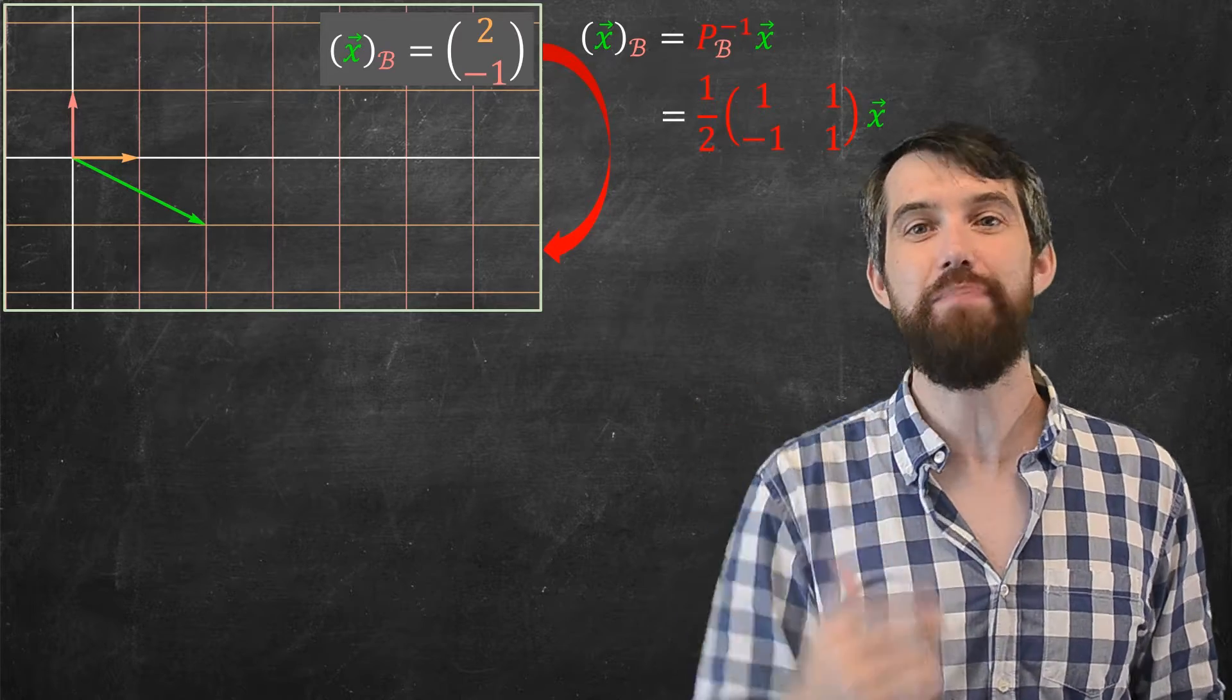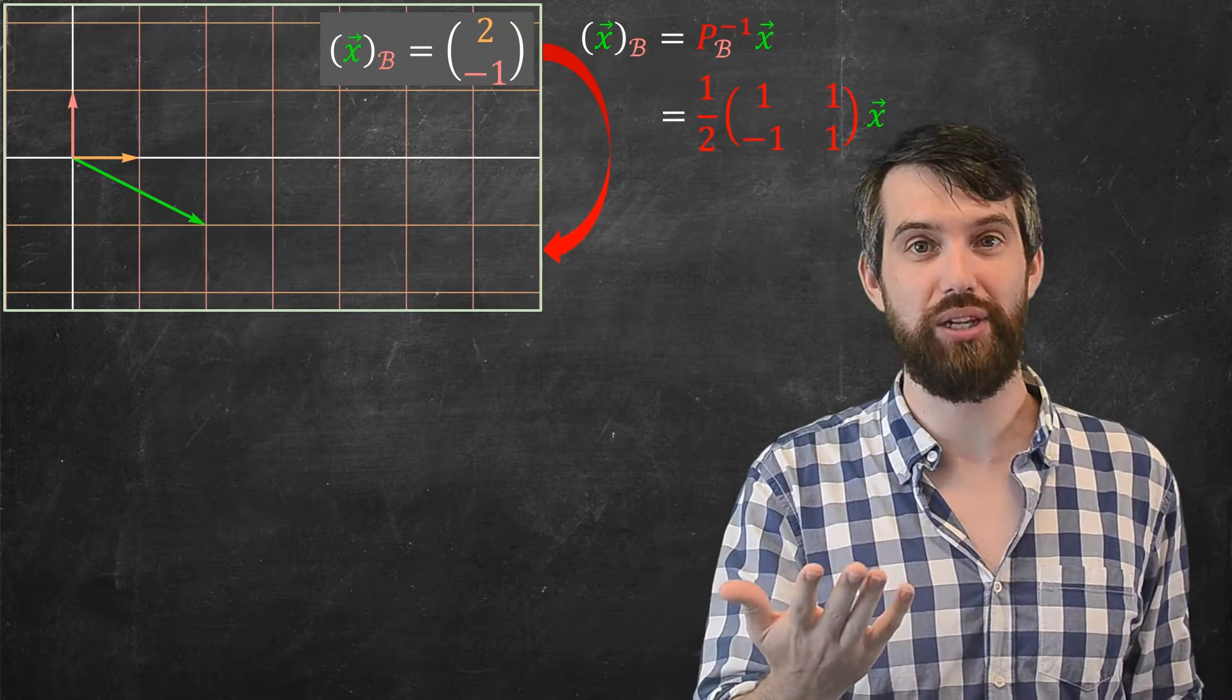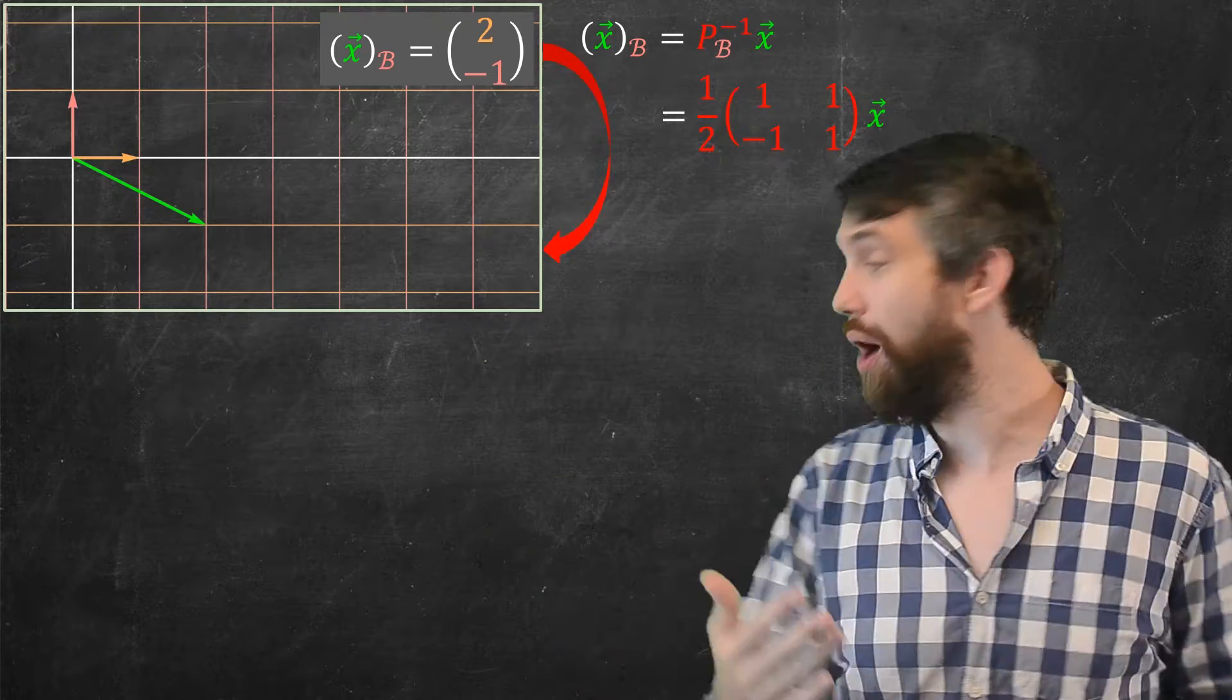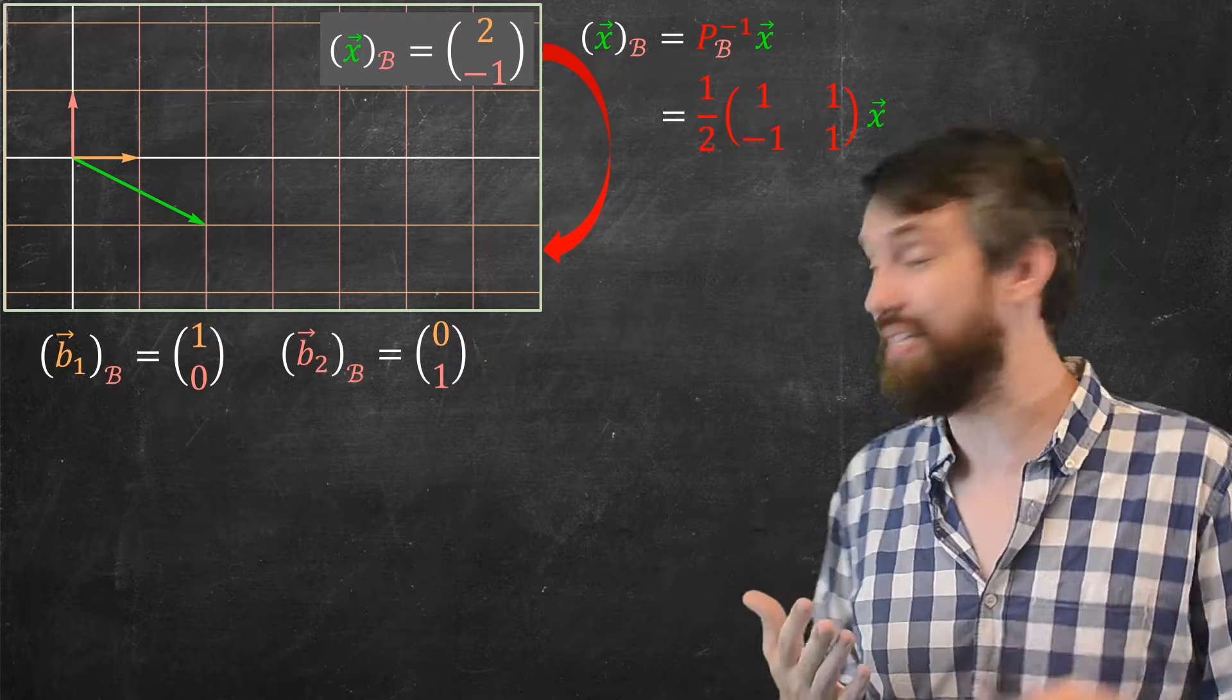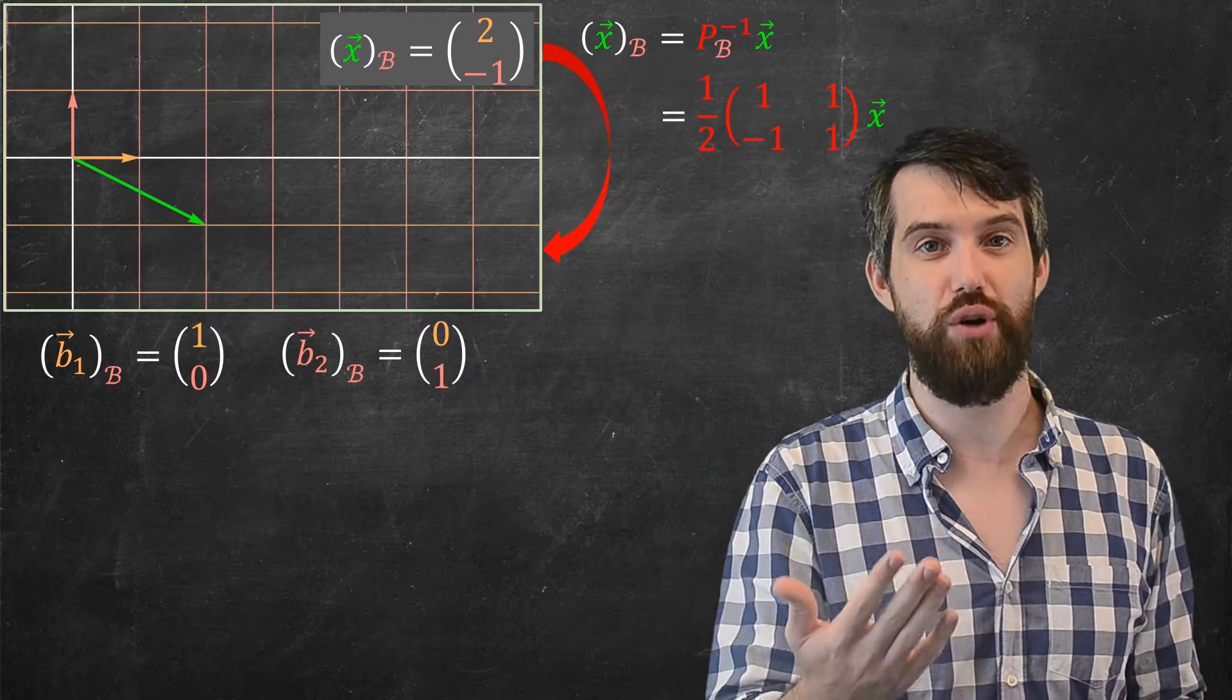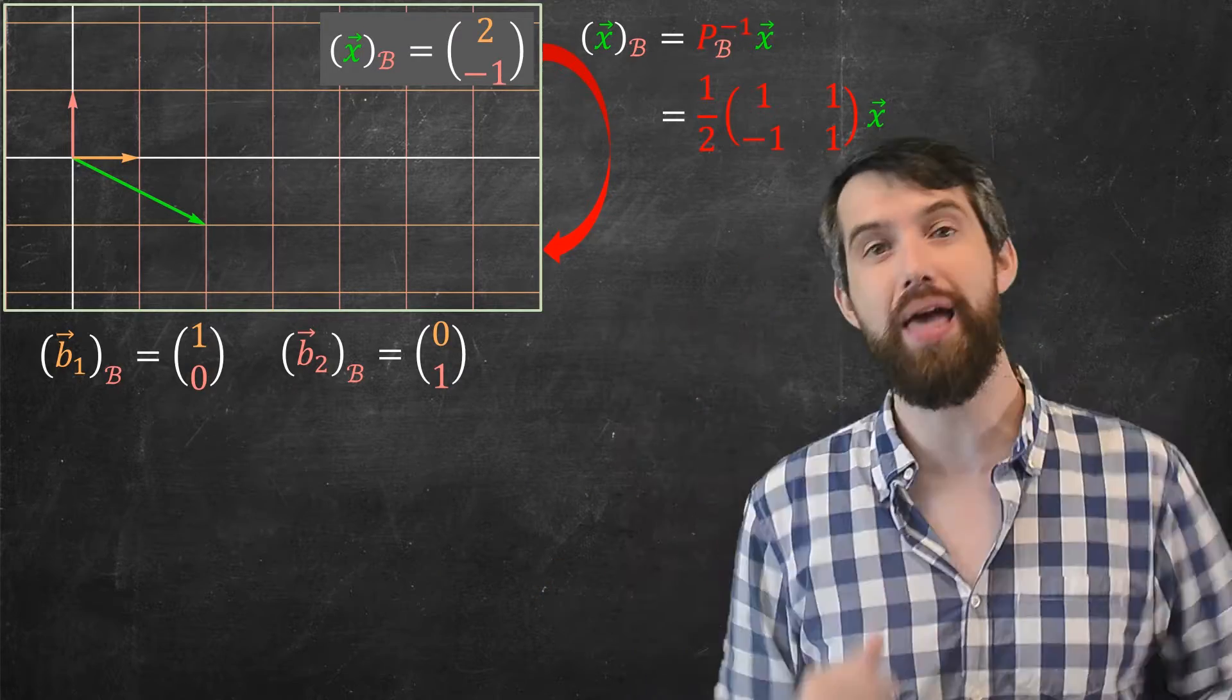Indeed, to somebody in the b basis, what does b1 look like? Well, b1 is one step along b1. To somebody in the b basis, they would say that the vector b written in the b basis is just one zero. It's one step to the right, to them.